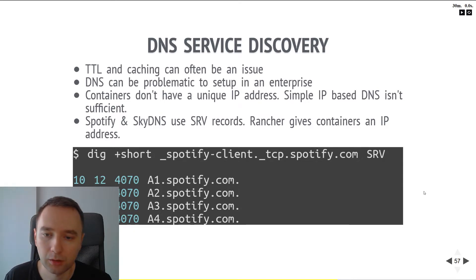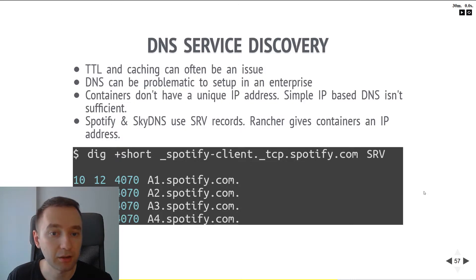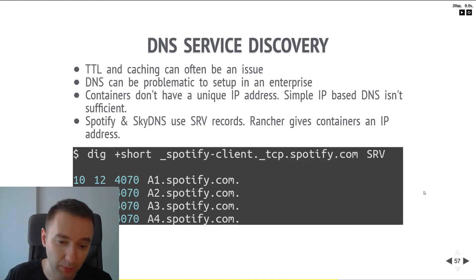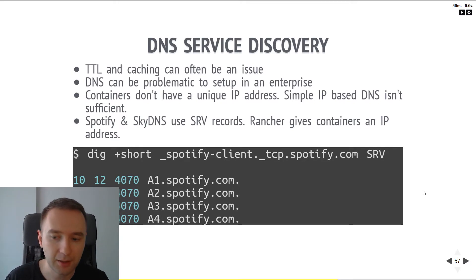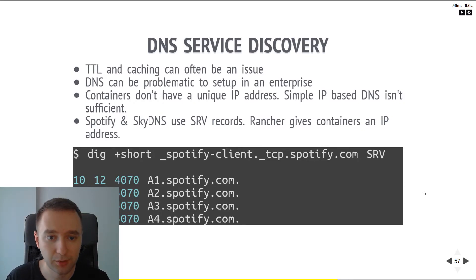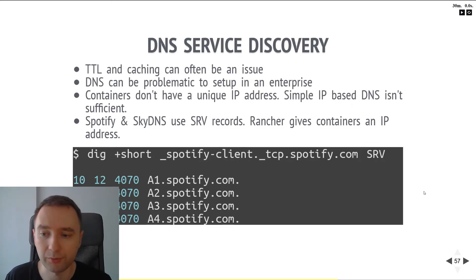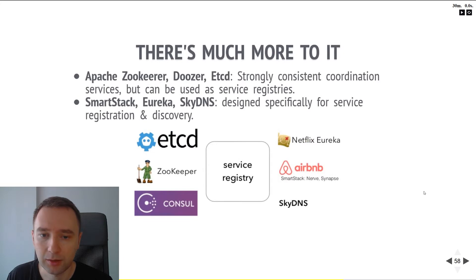Containers, for example, might not have a unique IP address — they might be behind some NAT or you might need to bridge the container. That's typically why you need multiple ports, because you might have the same service on several different containers on different ports across machines where the same port is not available on all of them.